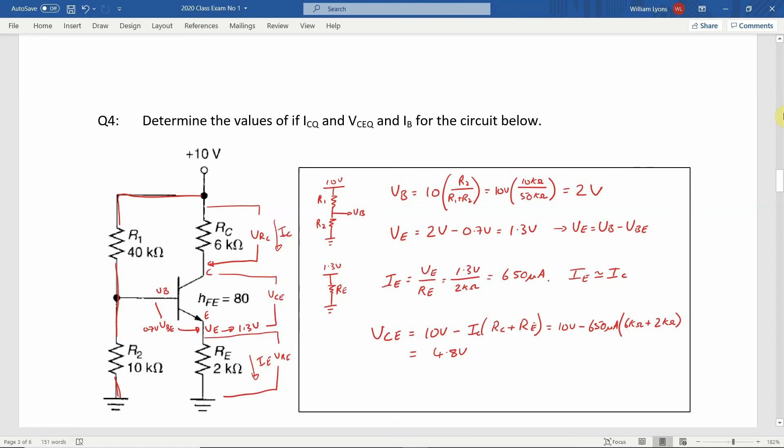Finally, to calculate the value of the base current IB, we take the emitter current and divide it by the sum of the DC beta of the transistor, shown as HFE equal to 80 in this example, and add 1 to it. Entering the relevant values into the equation gives a base current IB of 8.02 microamps.